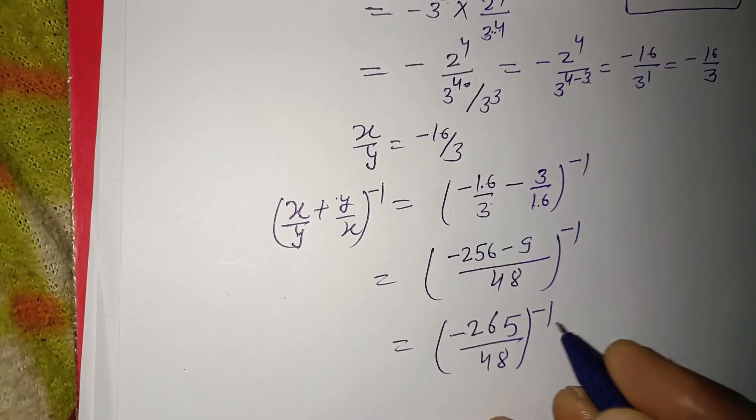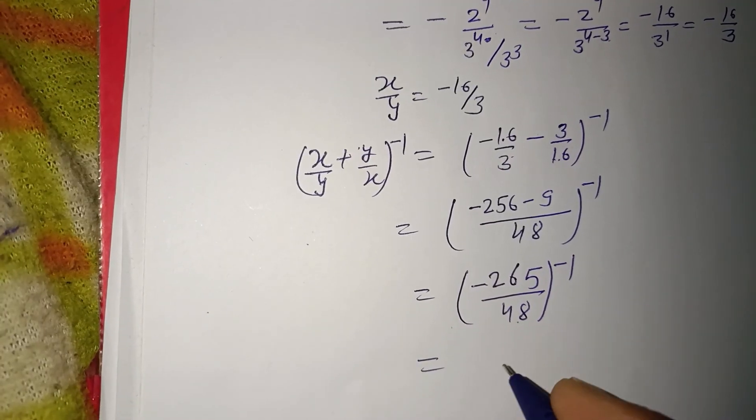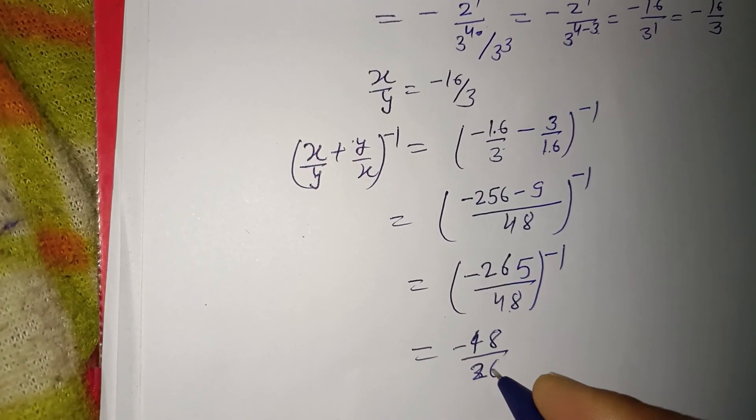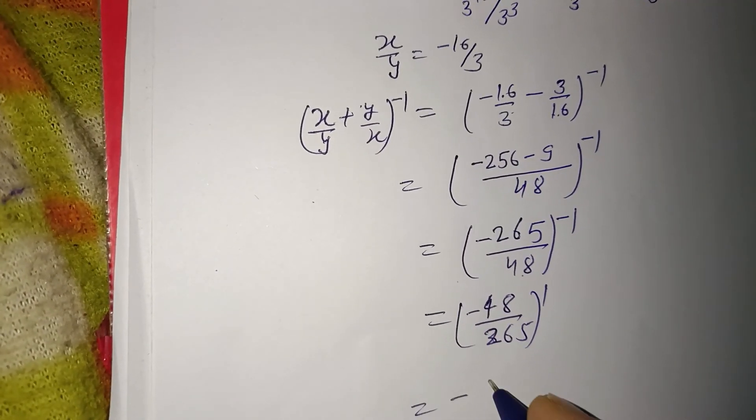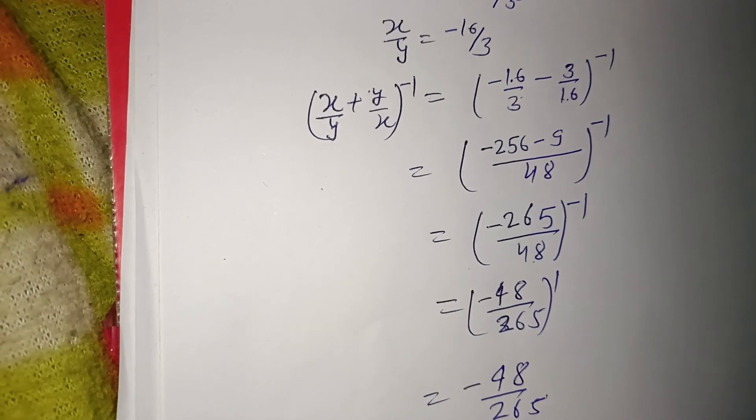If we reverse this number, the sign becomes positive. So -48/265 to the power 1, or we write it as -48/265, and this is our answer.